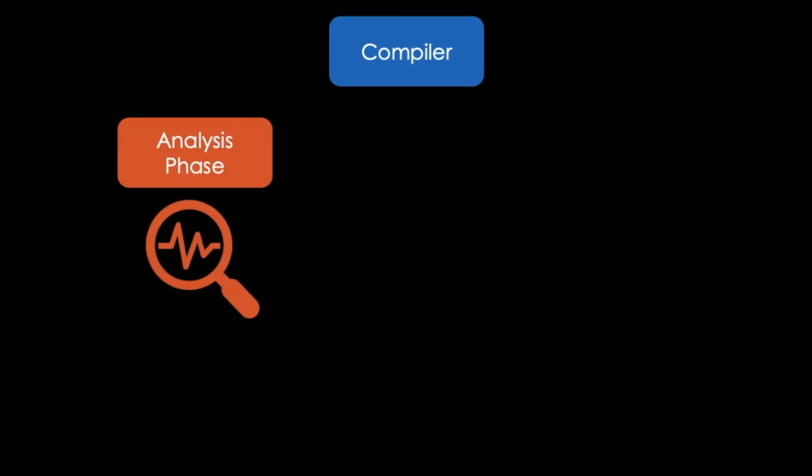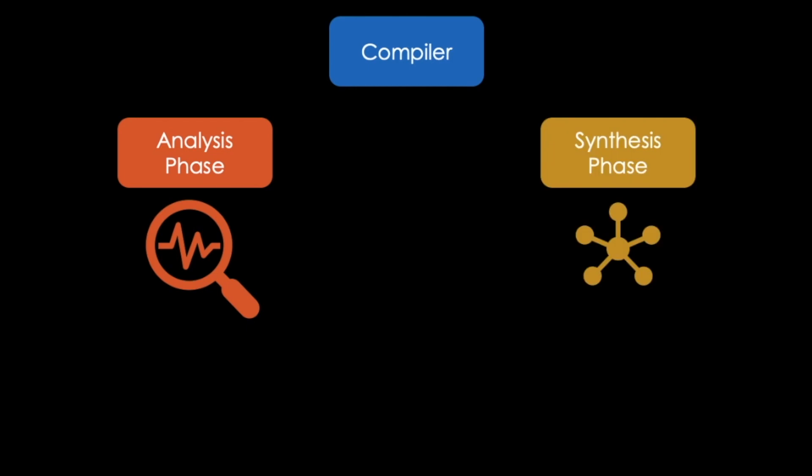But how does a compiler work? Well, first you have to know that the compiling process is divided into two phases. An analysis phase, also referred to as the frontend, and a synthesis phase, also referred to as the backend.